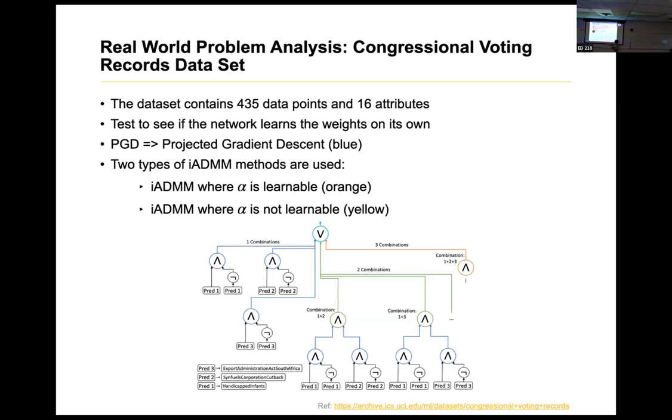In this, the results which we will see, PGD is blue, so projected gradient descent. I will just explain what projected gradient descent is. Bounded gradient descent without bounds is our normal gradient descent. Gradient descent which has bounds, which has constraints, is projected gradient descent. And the rest, it had two models of iADMM. One was where the alpha, which was a threshold value, one was where it was learnable, and one was where it was not learnable. We will go to the next one.